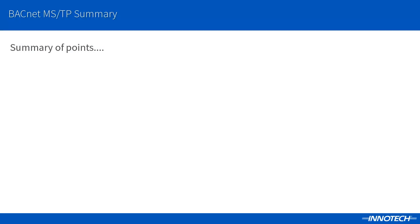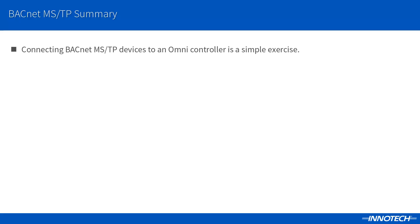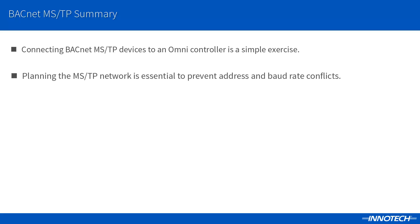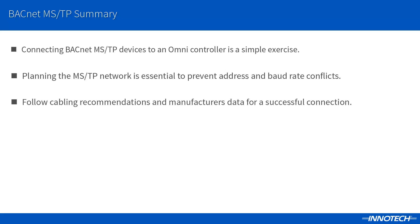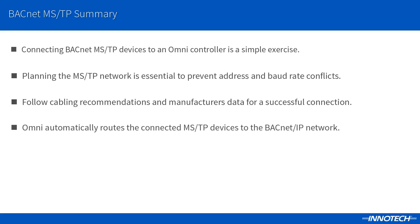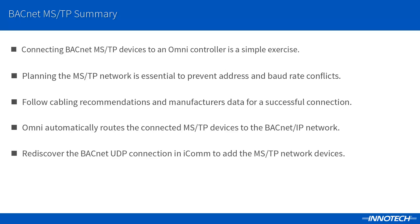To summarize what we have seen, connecting BACnet MSTP devices to an Omni controller is a fairly simple exercise when all the procedures outlined in this presentation are followed. Planning the MSTP network connection is essential to ensure that there are no BACnet instance, MSTP address, and baud rate conflicts. Following the cabling recommendations and manufacturer's data is important for a successful connection. When the Omni comms port is configured for BACnet MSTP communications, Omni automatically routes the connected MSTP device data to the BACnet IP network. After the network connection is complete, rediscover the BACnet UDP connection in ICOM to add the new MSTP network devices. The BACnet data points can then be used as required in your project for data sharing or within other Intertech software packages such as Magellan or Chronicle.